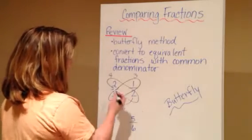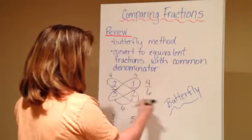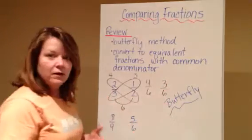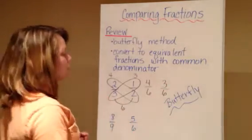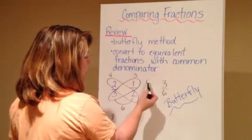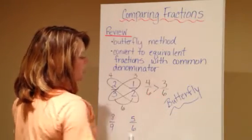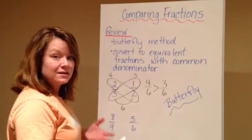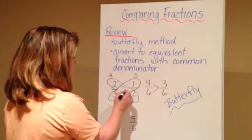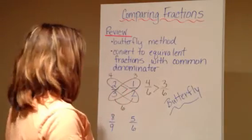So in reality I'm comparing four-sixths to three-sixths, and look — I've got the same denominator now. So all I need to do is look at my numerators. Four is larger than three, so four-sixths is greater than three-sixths, or two-thirds is greater than one-half.